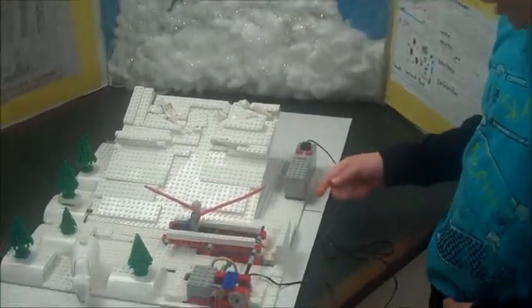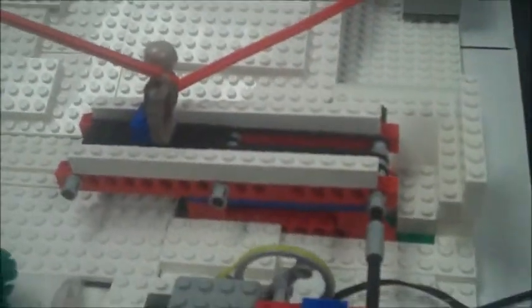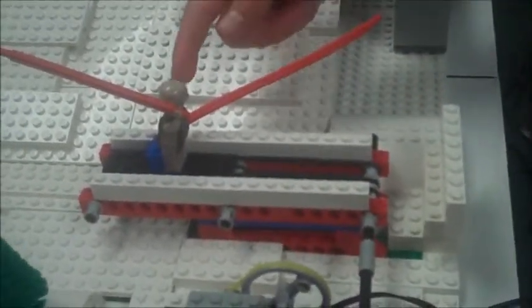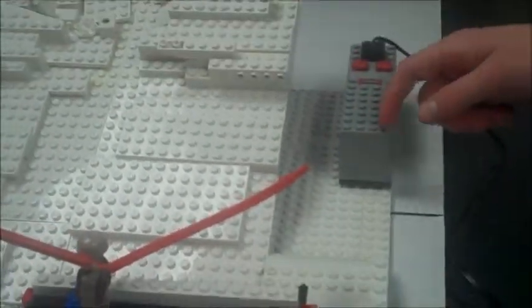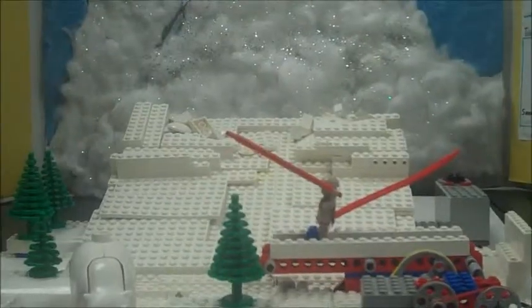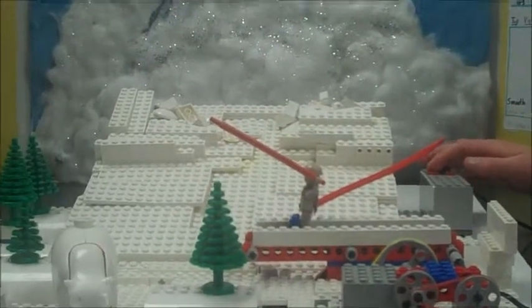We built a conveyor belt so when all the snow comes down while tumbling down, he'll get away safely because the conveyor belt is attached to a power source. Now we're going to demonstrate how it works.